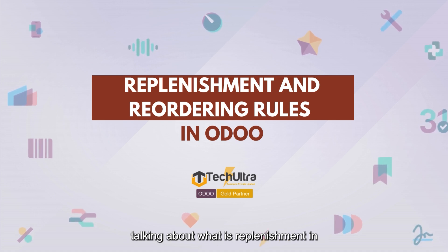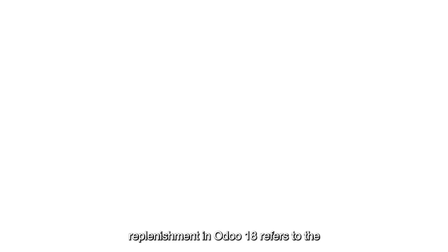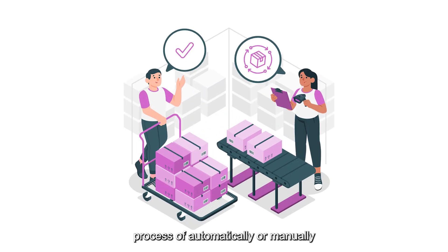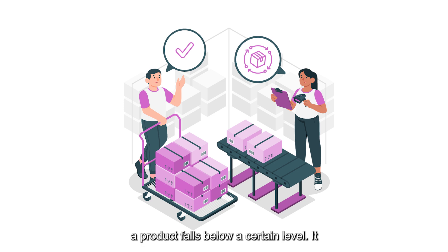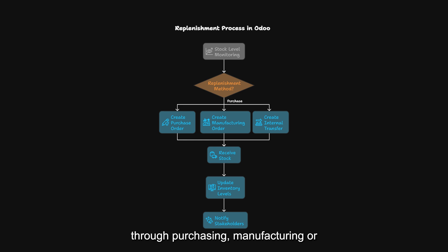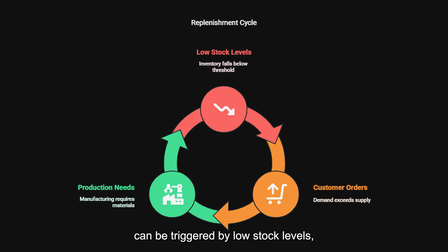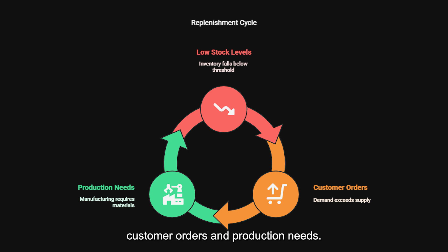Replenishment in Odoo 18 refers to the process of automatically or manually refilling stocks when the quantity of a product falls below a certain level. It ensures that you always have enough inventory to meet the demand, whether through purchasing, manufacturing, or internal transfers. Replenishment can be triggered by low stock levels, customer orders, and production needs.